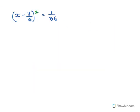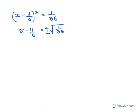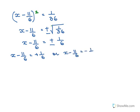Taking the square root of both sides, the right side becomes ±√(1/36) = ±1/6, and we get x + 11/6 = ±1/6. There are two cases. For the plus case: x = 1/6 - 11/6 becomes x = (1+11)/6 = 12/6, so x = 2.